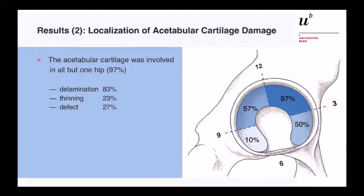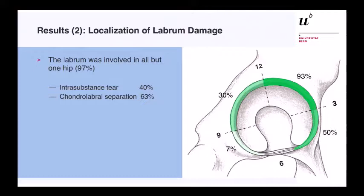The acetabular cartilage was involved in all but one hip. We found delamination in most cases, typically in the anterior superior quadrant — very similar to what we find in impinging hips, although this is a completely different pathology. Cartilage thinning was present in 23% and a full-thickness defect in 27%. The labrum damage was also found predominantly in the anterior superior quadrant, followed by the anterior inferior and posterior superior quadrants. We found intrasubstance tears in 40% and chondrolabral separation in 63%.